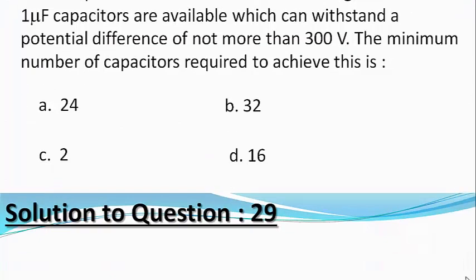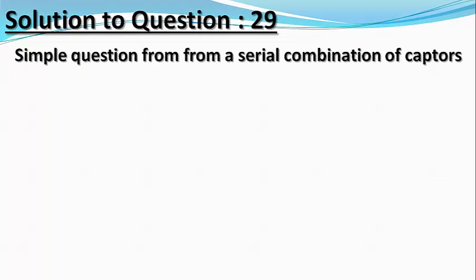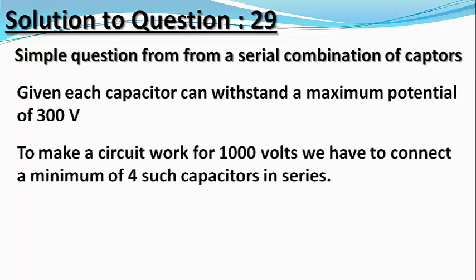This is a very simple question on series and parallel combination of capacitors. Given each capacitor can withstand a maximum potential of 300 volts, to have a capacitor that can withstand a voltage of 1000 volts we have to connect a minimum of four capacitors in series.